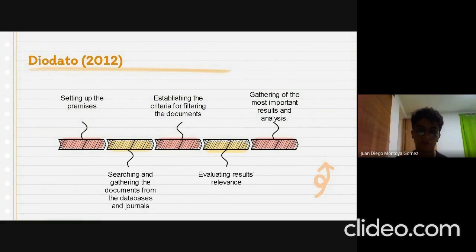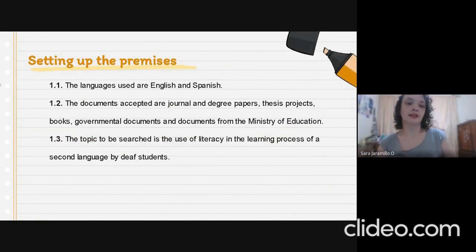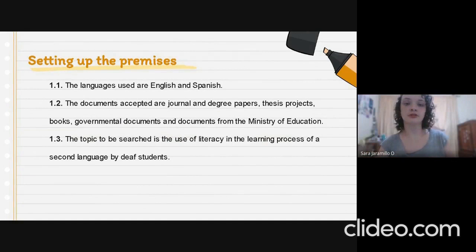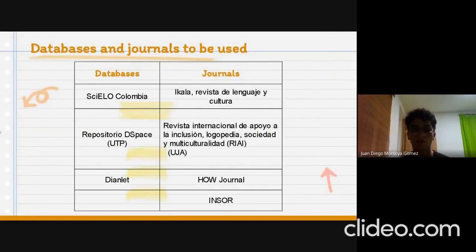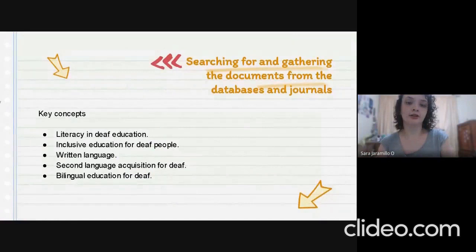The first step is setting up the premises: the languages used are English and Spanish; the documents accepted are journal and degree papers, thesis projects, books, governmental documents, and documents from the Ministry of Education; and the topic to research is the use of literacy in the learning process of a second language by deaf students. The key concepts used to search databases are: literacy in education, inclusive education for deaf people, written language, second language acquisition for deaf, and bilingual education for deaf.